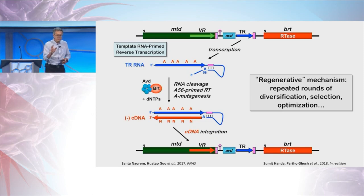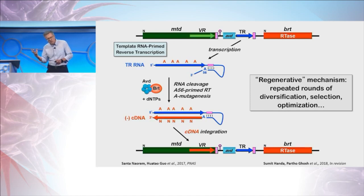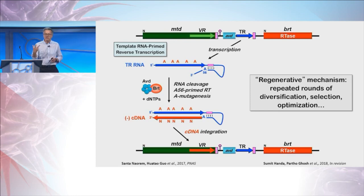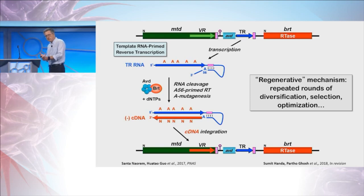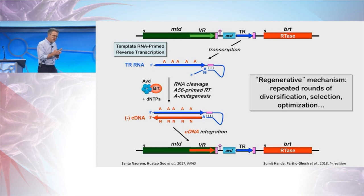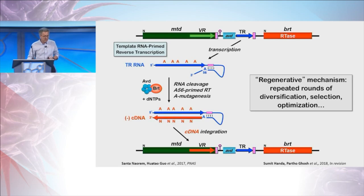Taking a step back and thinking about the molecular logic: everything required to execute this mechanism again and again is precisely reconstituted after every diversification event. This is very different from what happens following VDJ recombination during antibody production. The template repeat is never corrupted and all the trans-acting factors are preserved. We think the system is designed to undergo iterative optimization along some evolutionary trajectory that depends on the organism, its environment, and the setup of its diversity generator.